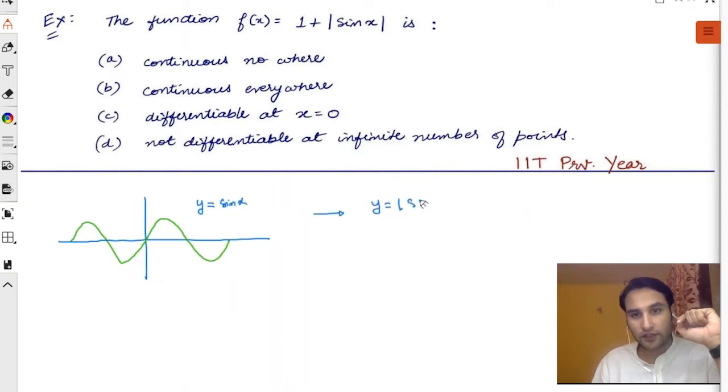What will happen once you have done that? Then visualize the graph of y is equal to mod sine x plus one. If you have attended my previous sessions on graphs, you will know the transformation—the graph will shift up by one. But don't worry, do it now. Let me run the poll.